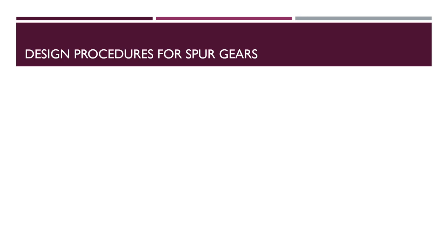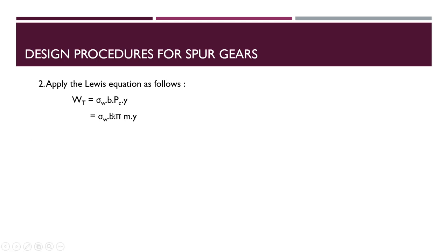Next we apply the Lewis equation, which is the equation designed for gear design. It is given by: Wt = σw × b × Pc × Y, where σw is the allowable working stress, b is the face width, Pc is the circular pitch, and Y is the Lewis form factor. Substituting Pc = πm, this becomes Wt = σ0 × Cv × b × π × m × Y, where σ0 is the allowable static stress and Cv is the velocity factor.